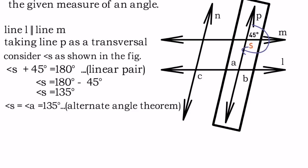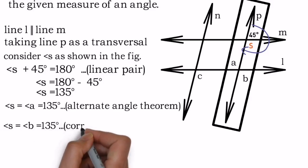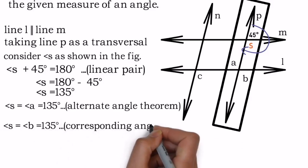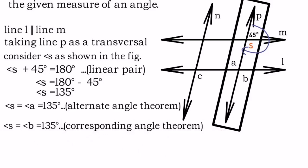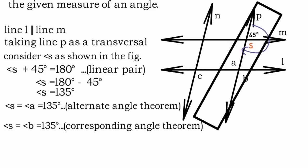Now to find angle b, you can utilize angle a or angle s. Angle s is equal to angle b, which makes it 135 degrees because they are corresponding angles, and that gives the corresponding angle theorem as a reason.